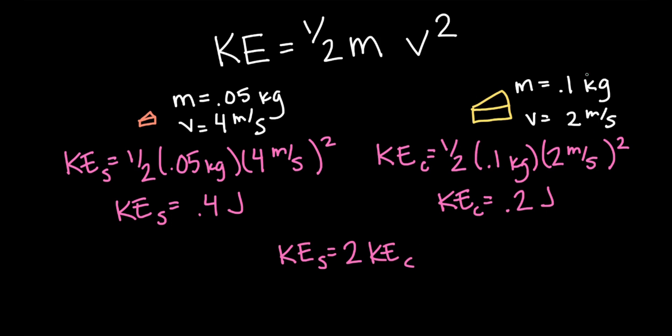So we can see that even though the cheddar has more mass, the Swiss has more kinetic energy because it's going faster.